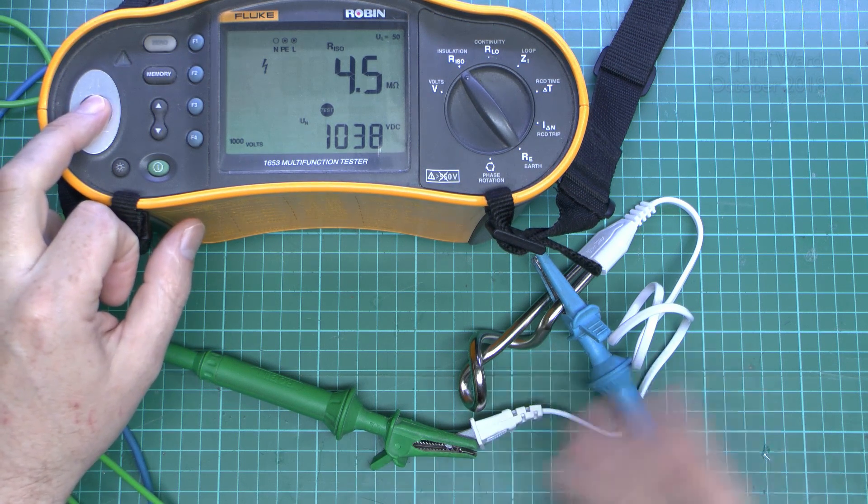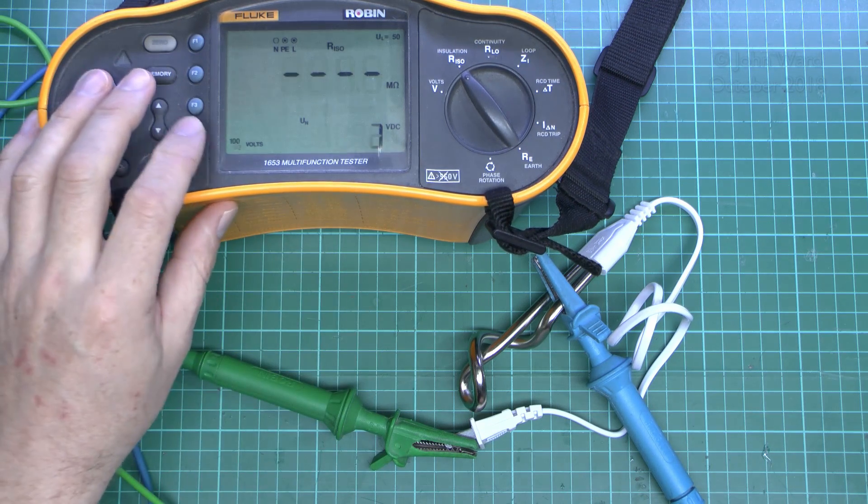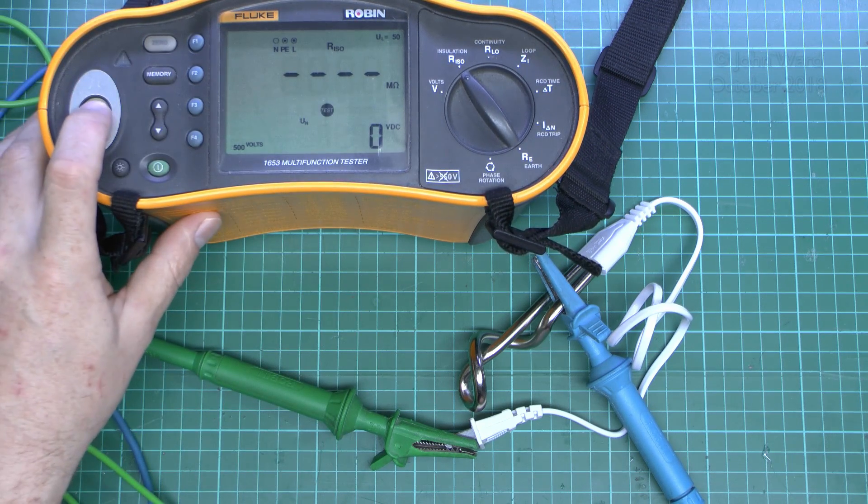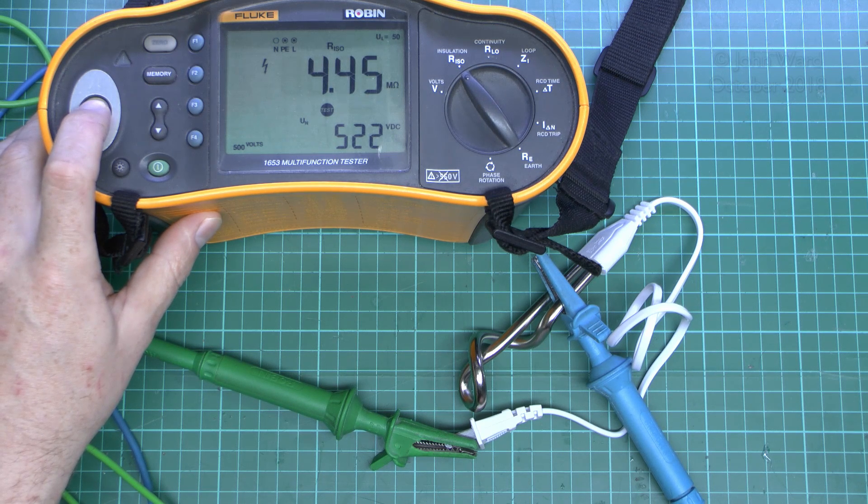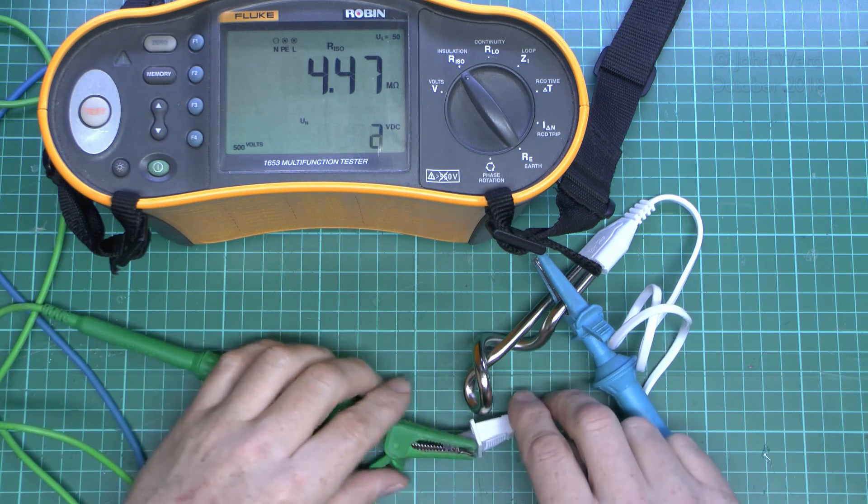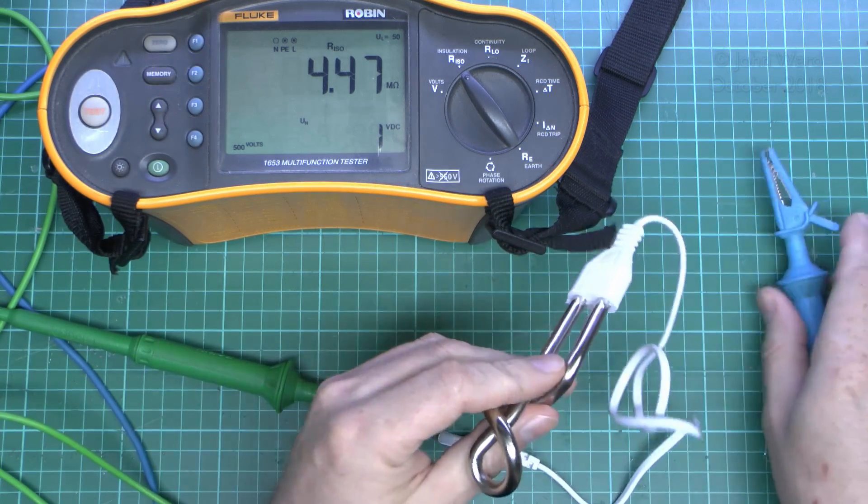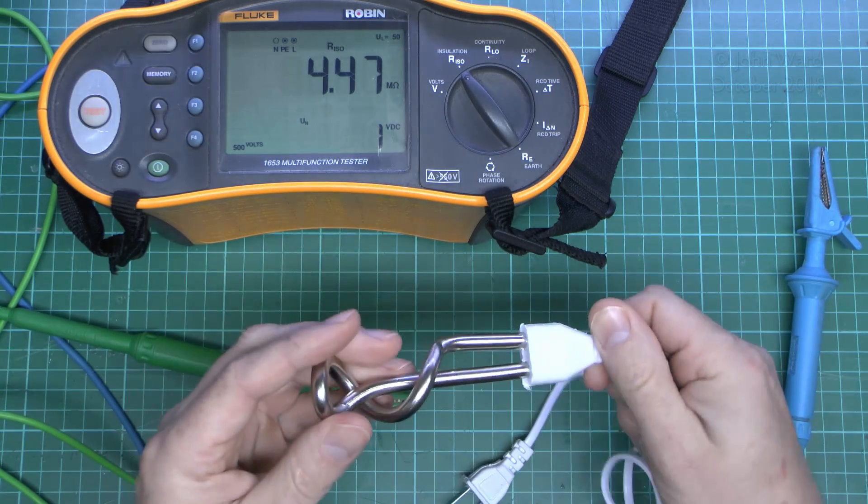Or preferably in the many hundreds for a brand new item. Let's try that at the 500 level, and again it's pretty much the same result there. So 4.5 megaohms is certainly a pass, but it's certainly not in the realms of what you'd expect from a new piece of equipment.